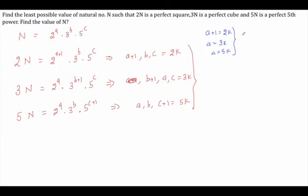Why 15? Because a must be a multiple of 5, so checking 5 and 10: 10 is not a multiple of 3. The next multiple of 5 is 15. And 15 is a multiple of 5, 15 is a multiple of 3, and 15+1 = 16 is a multiple of 2. So a = 15.